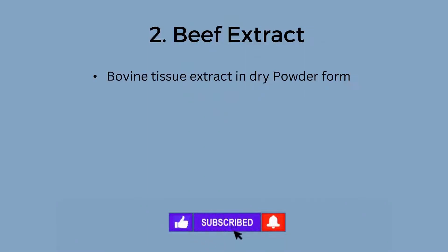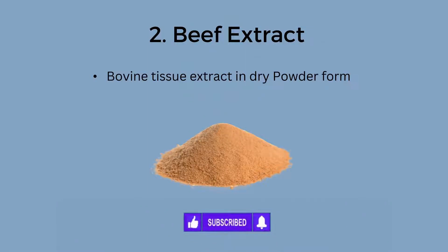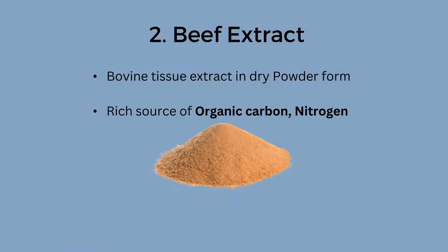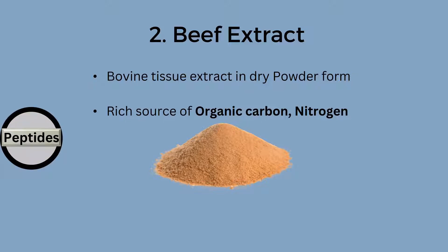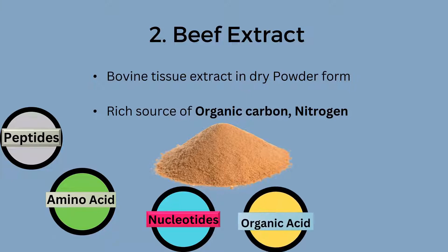The second ingredient in the nutrient broth is beef extract. Beef extract is bovine tissue extract in dry powder form. It is a rich source of organic carbon and nitrogen. Beef extract provides a mixture of different nutrients such as peptides, amino acids, nucleotides, organic acids, minerals and vitamins.